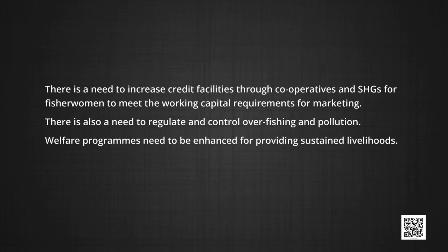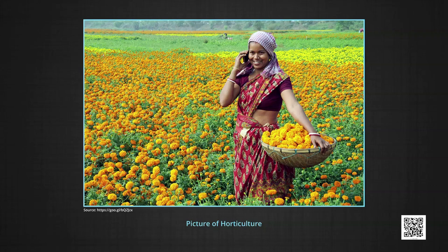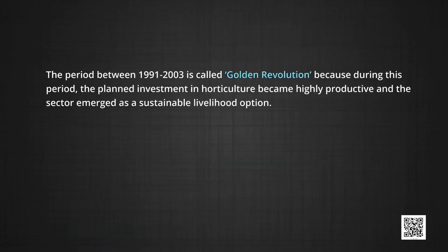India is blessed with varying climate and soil conditions. The country has initiated the growing of diverse horticultural crops such as fruits, vegetables, tuber crops, medicinal and aromatic plants, spices, and plantation crops. These crops play an important role in providing food, nutrition, and employment. The period between 1991 and 2003 is called the Golden Revolution because during this period, planned investment in horticulture became highly productive and the sector emerged as a sustainable livelihood option.